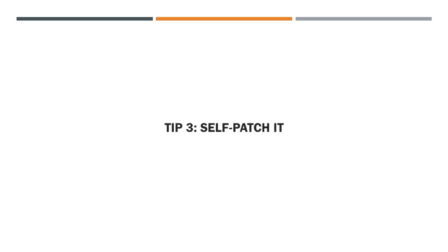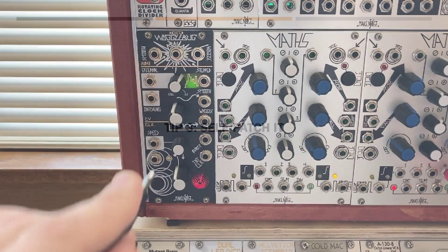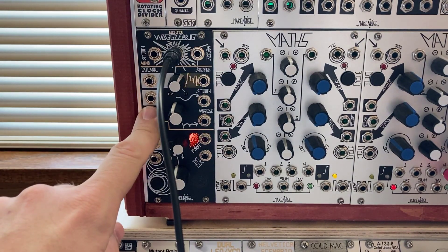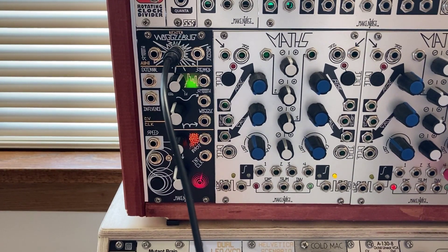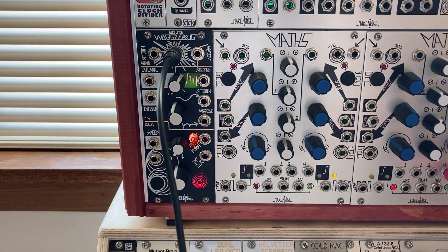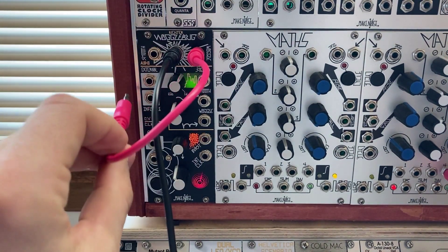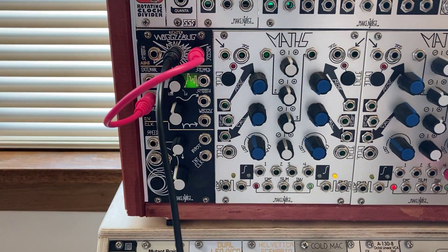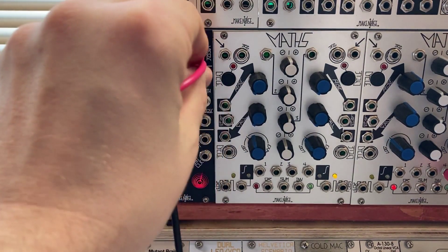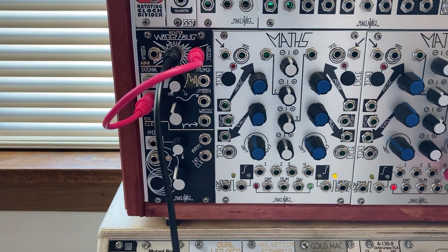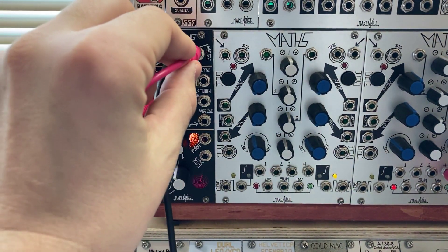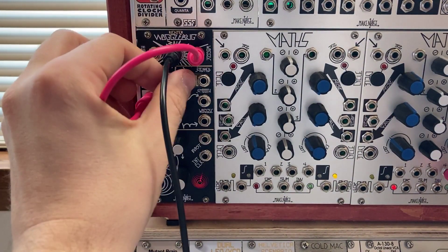Tip number three is to self-patch the module, and in my opinion, this is where things can get pretty interesting. We're going to listen to the ring mod output again and let it do its thing. Recall that the influence input takes an AC signal, and before we used an external oscillator. What if we took the Woggle output and fed it back into itself? So I'm just going to take the Woggle output, put it into the influence input, and listen to the tone change. And we can get a different sound if we feed the smooth output back into itself as well.